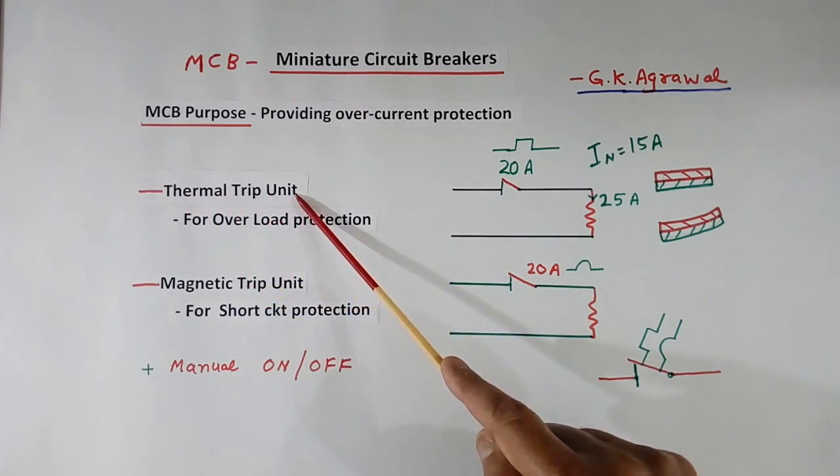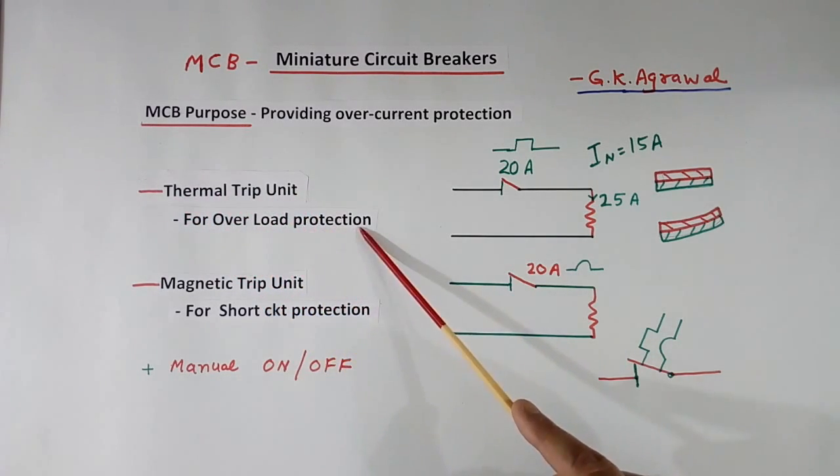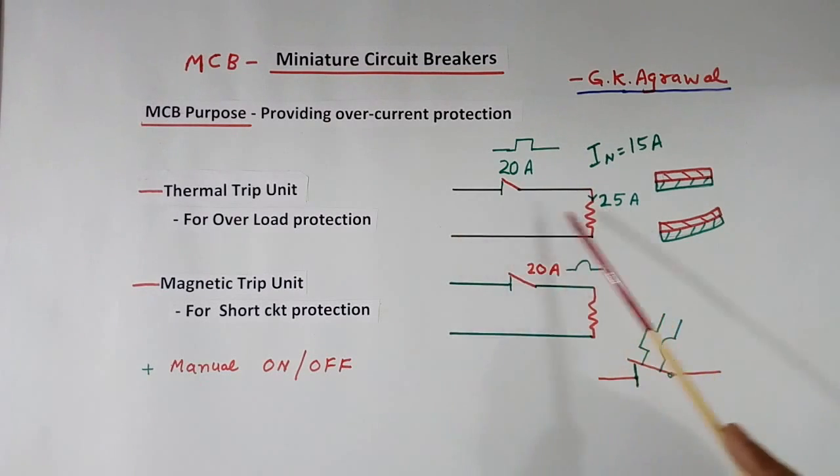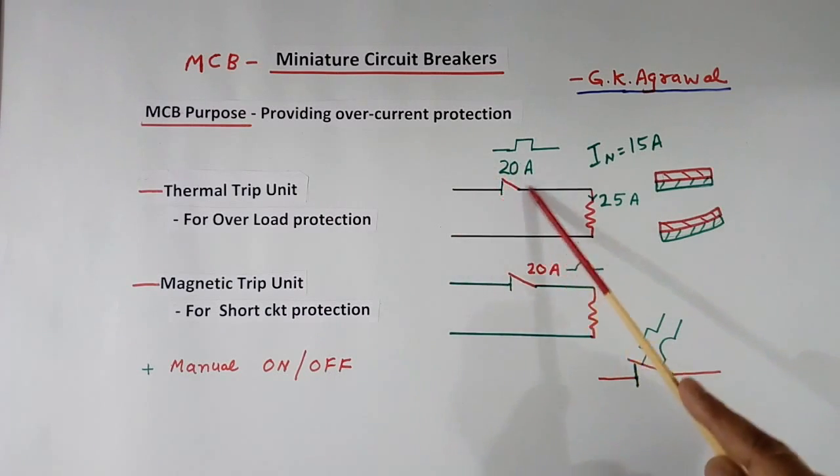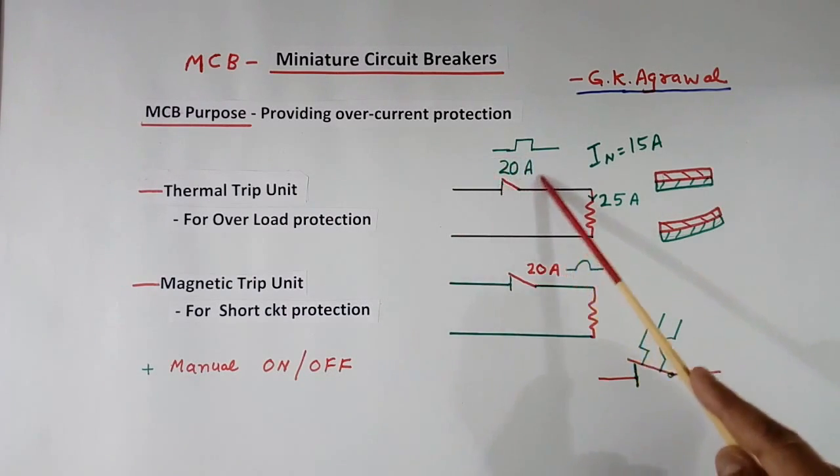Thermal trip unit is for overload protection. Suppose this is our system, this is the load. Nominal current is 15 Ampere. MCB provided is 20 Ampere, rated for 20 Ampere.